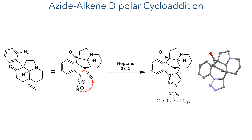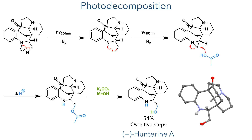With the polycyclic framework now formed, the remaining alkene then took part in an azide-alkene dipolar cycloaddition. While this step could be telescoped directly from the previous reaction, they found that better stereoselectivity could be achieved by first isolating the compound and then stirring it in heptane at 23 degrees. This formed a triazoline ring in an 80% yield with a 2.5:1 dr at C19, and its structure was proved by X-ray crystallography. This triazoline ring was then photodecomposed using UV light, eliminating nitrogen gas to form a diradical species. These radicals then combine to form a 3-membered aziridine ring, which was then attacked by acetic acid. This opens the ring to form an ester, and this ester was then hydrolyzed with potassium carbonate in methanol, with a 54% yield over two steps.